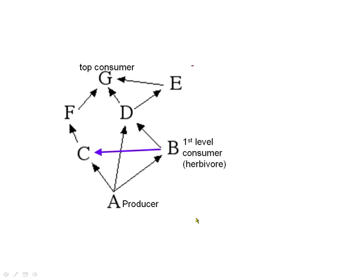If I added an arrow showing B eating A, then B eats producers and would be an herbivore. But if C is also eating B, then C is eating both plants and a first-level consumer, making C an omnivore. So on a test I would ask: who is an omnivore on this chart? If it's set up like this, you'd say: look at C, he's eating a plant and a first-level consumer — C must be the omnivore.